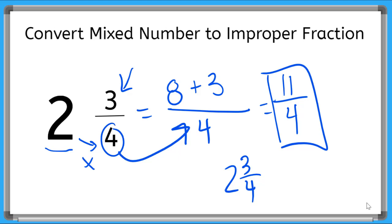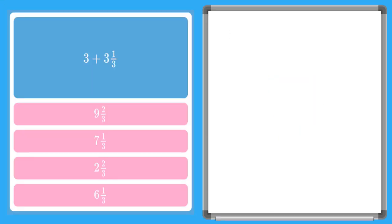Now let's try using improper fractions to add mixed numbers. Here I have my whole number, 3, plus my mixed number, 3 and 1 third. Let's convert our mixed number to an improper fraction. First, I multiply my whole number by my denominator, 3 times 3, that gives me 9. I add my numerator, 1, and I keep my denominator the same. So this equals 10 over 3.